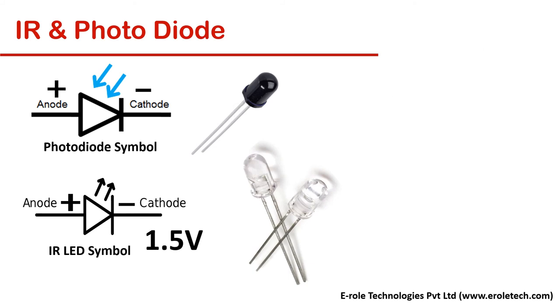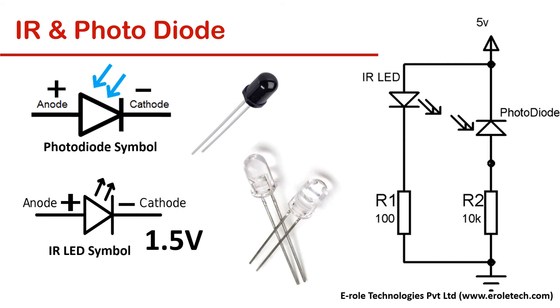Photodiode is always used in reverse bias and IR diode is used in forward bias. In IR and photodiode, flat side indicates the cathode and round side indicates the anode. TV remote control system works using IR LED and photodiode.